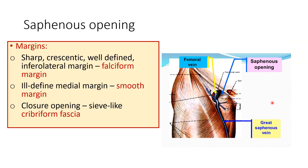In this picture, you can see the sharp, crescentic, and well-defined inferolateral margin known as the falciform margin, and an ill-defined smooth medial margin. This opening is closed by a sieve-like fascia — the cribriform fascia — which is pierced by the great saphenous vein. You can see the contents of the femoral sheath: the femoral artery and the femoral vein. The great saphenous vein joins the femoral vein.